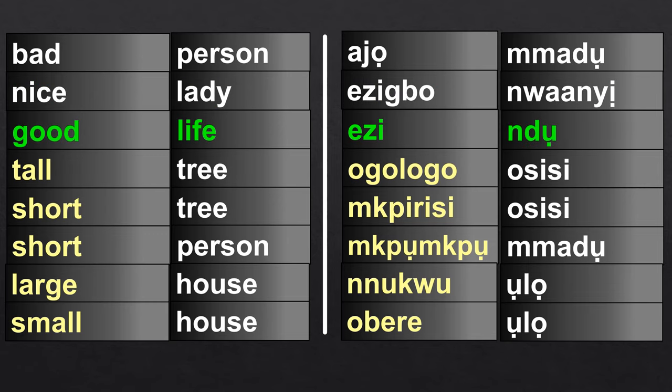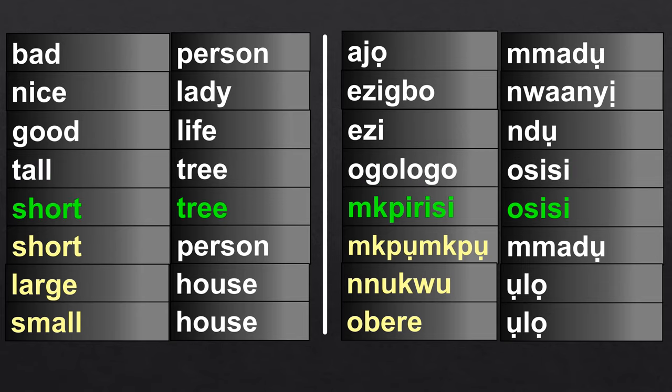Good life: Eze ndo. Ndo is life. Tall tree: Ogologo osisi. Short tree: Ngbirisi osisi. Short person: Ngbongbo madu.